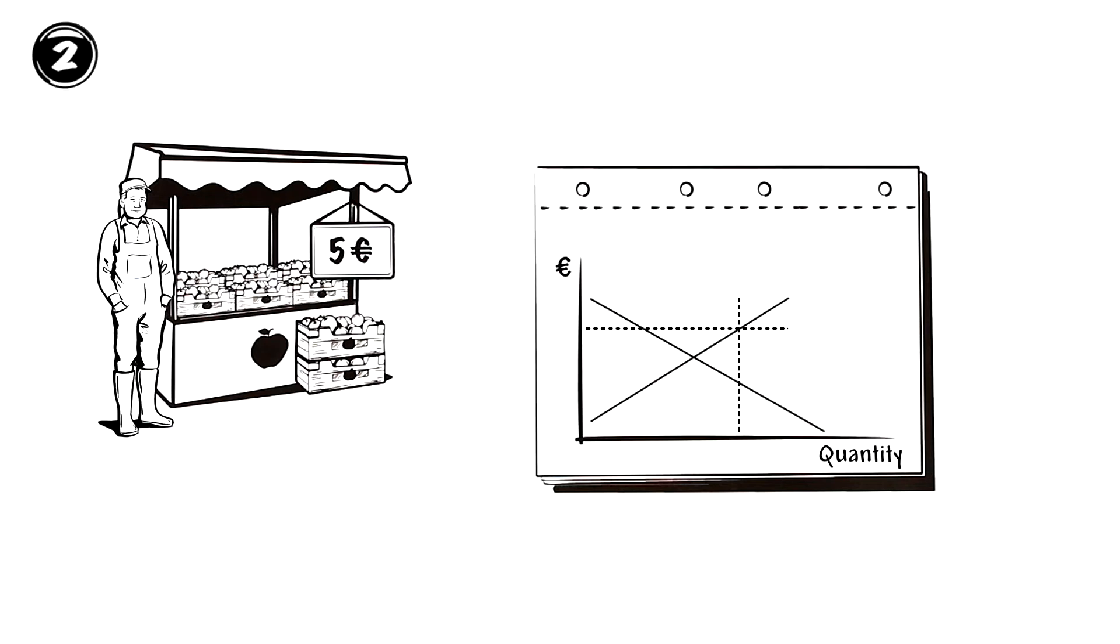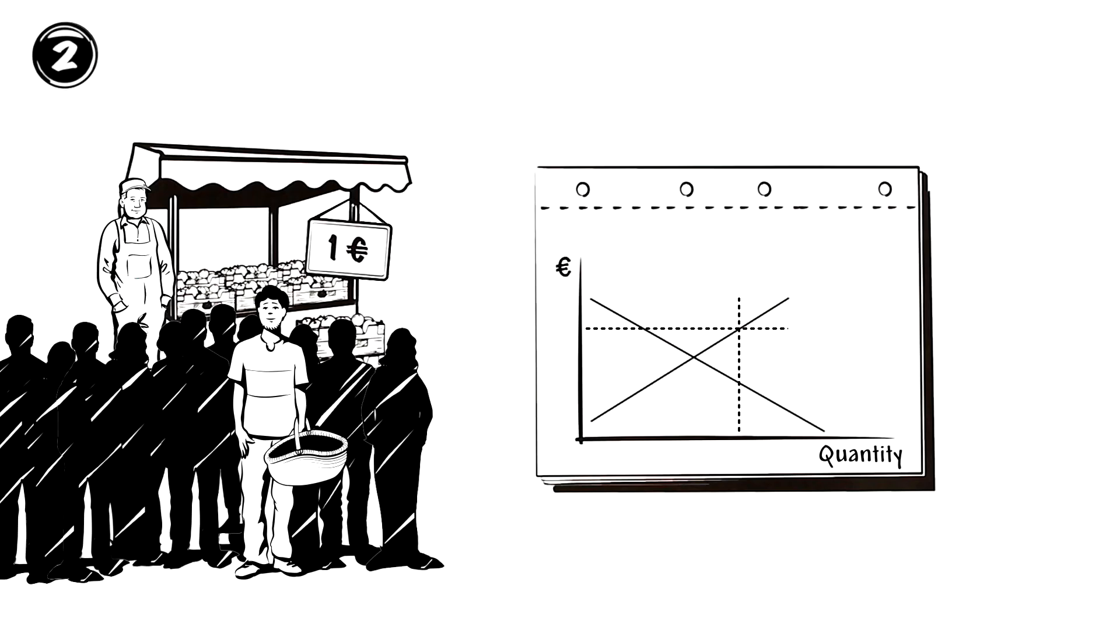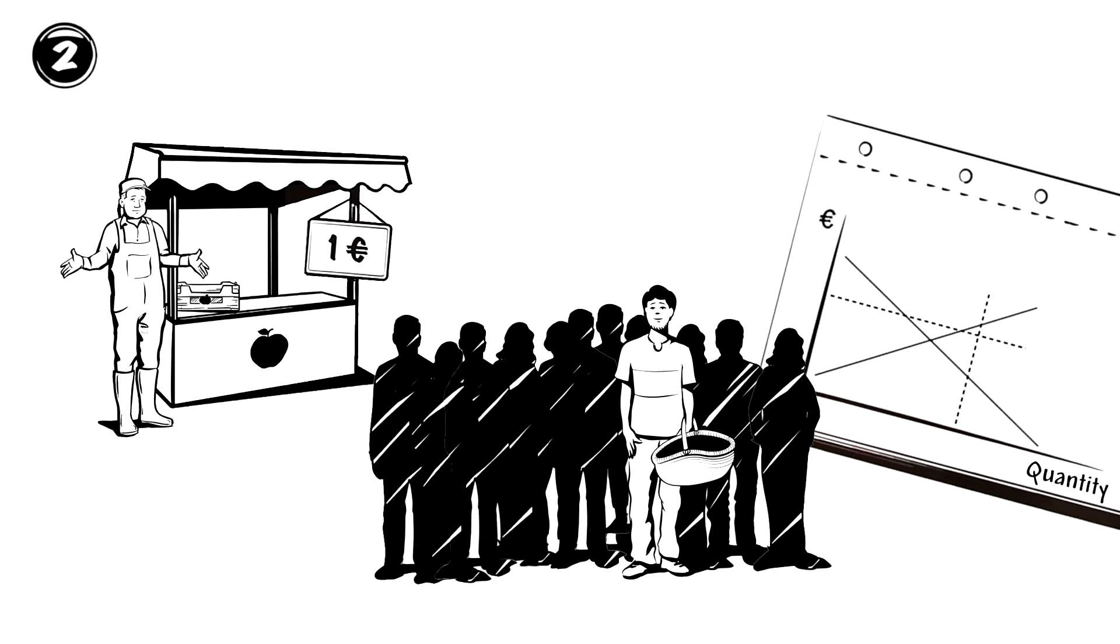When Farmer Davies sells his apples for 1 euro per kilo instead, it does not cover his costs. All of a sudden, so many customers are interested in his goods that demand quickly exceeds supply and leads to excess demand. The price is now below the equilibrium price.